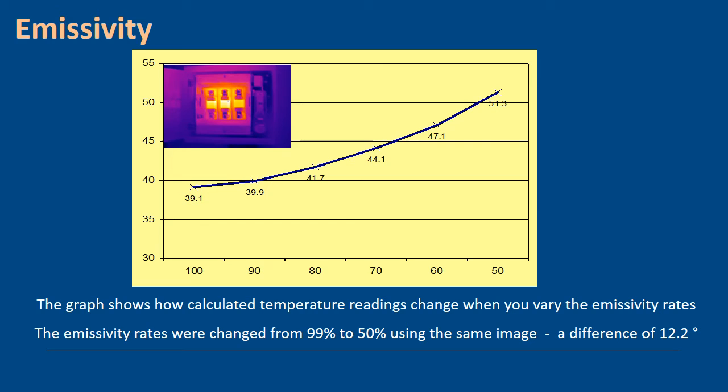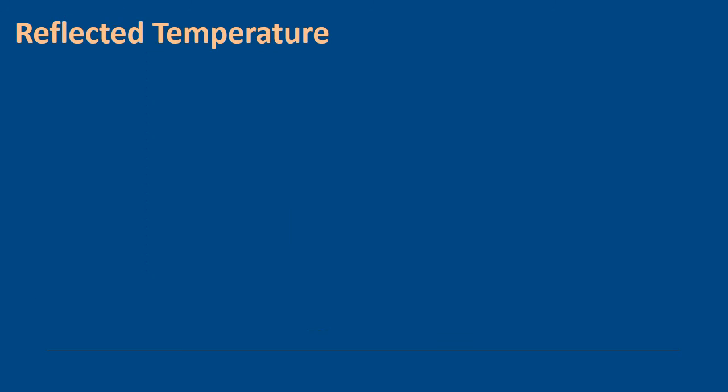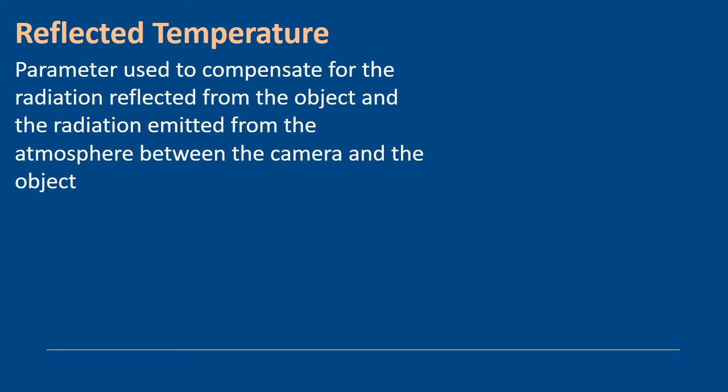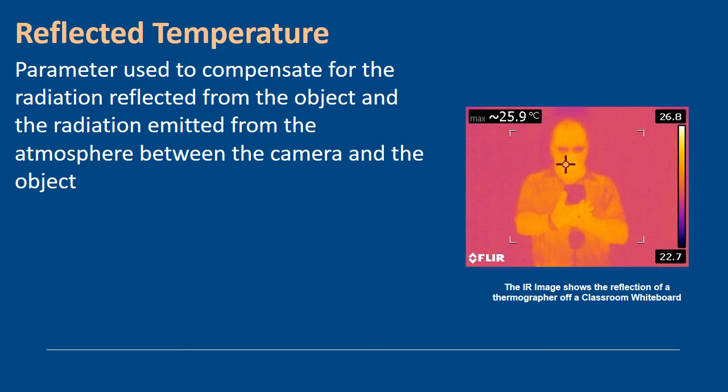When we then understand reflection, we spoke about when I looked at Kirchhoff's law a few slides ago, we showed that reflection and emissivity are inversely linked. So whatever I do to one affects the other. When we look at reflected temperature, this parameter is used inside the camera to compensate for radiation reflected from the object and the atmosphere between the camera and background objects.